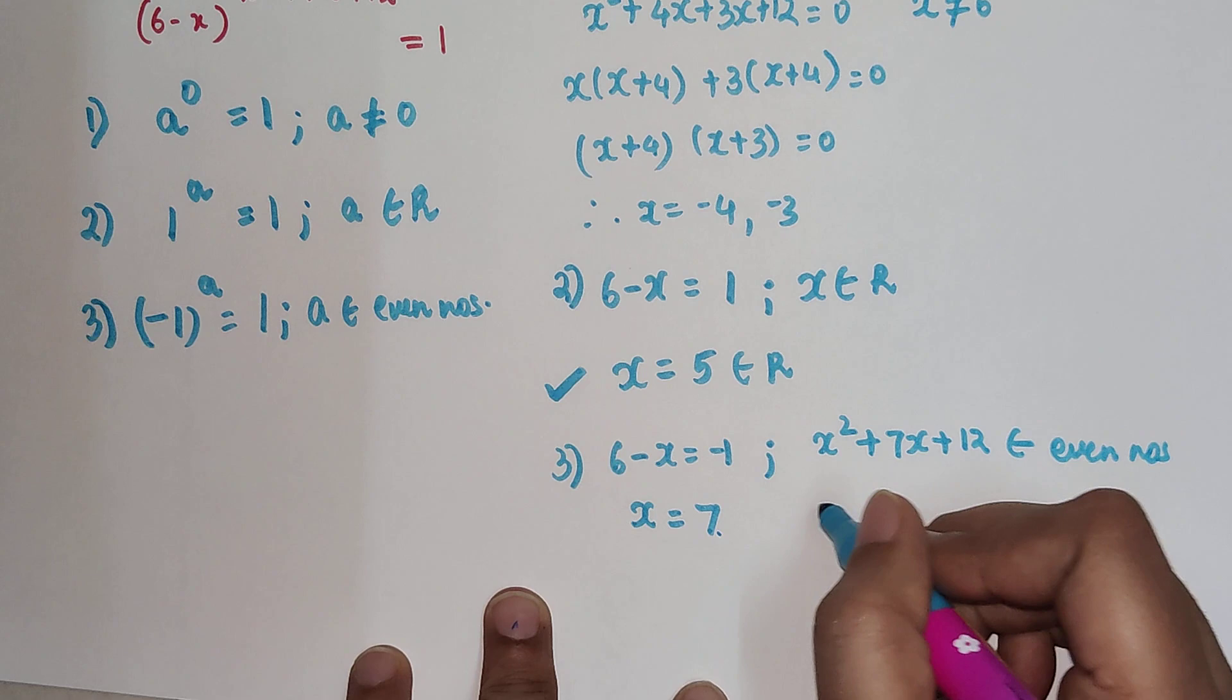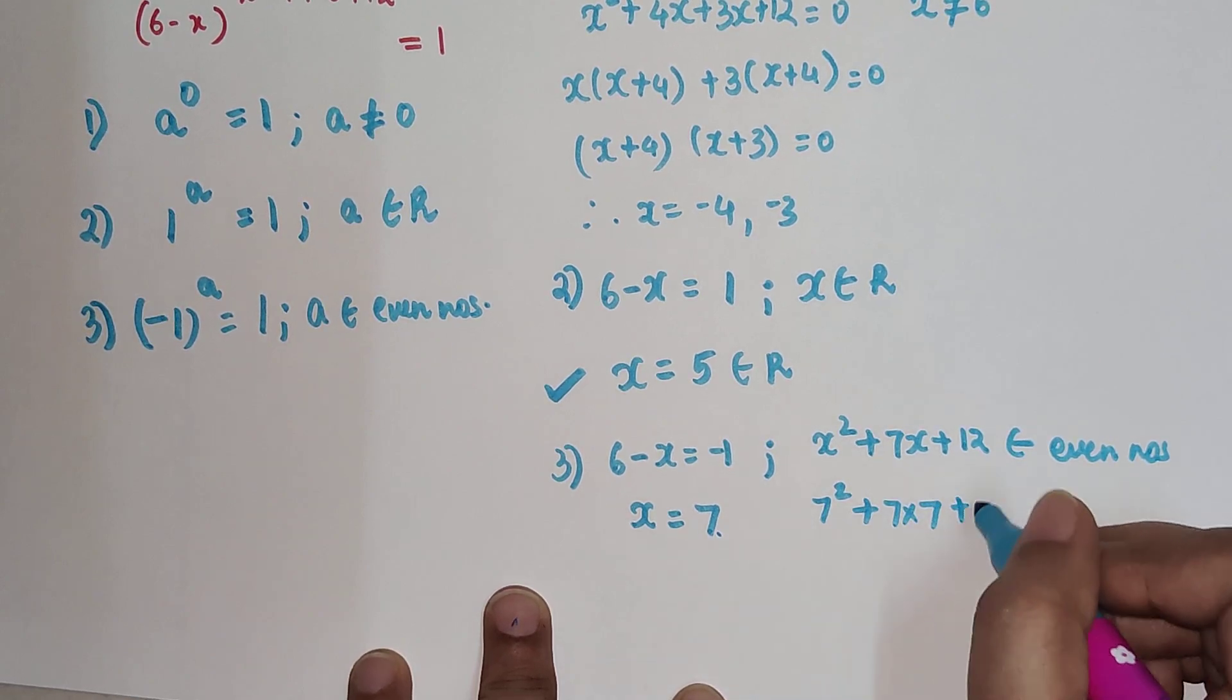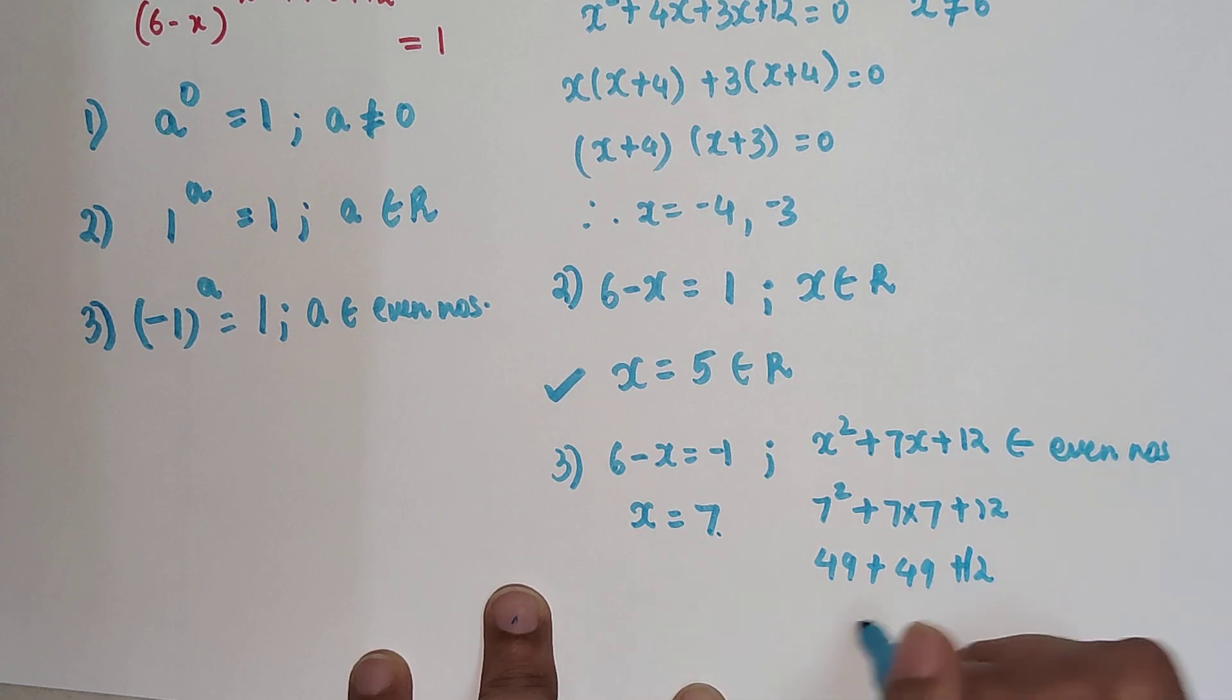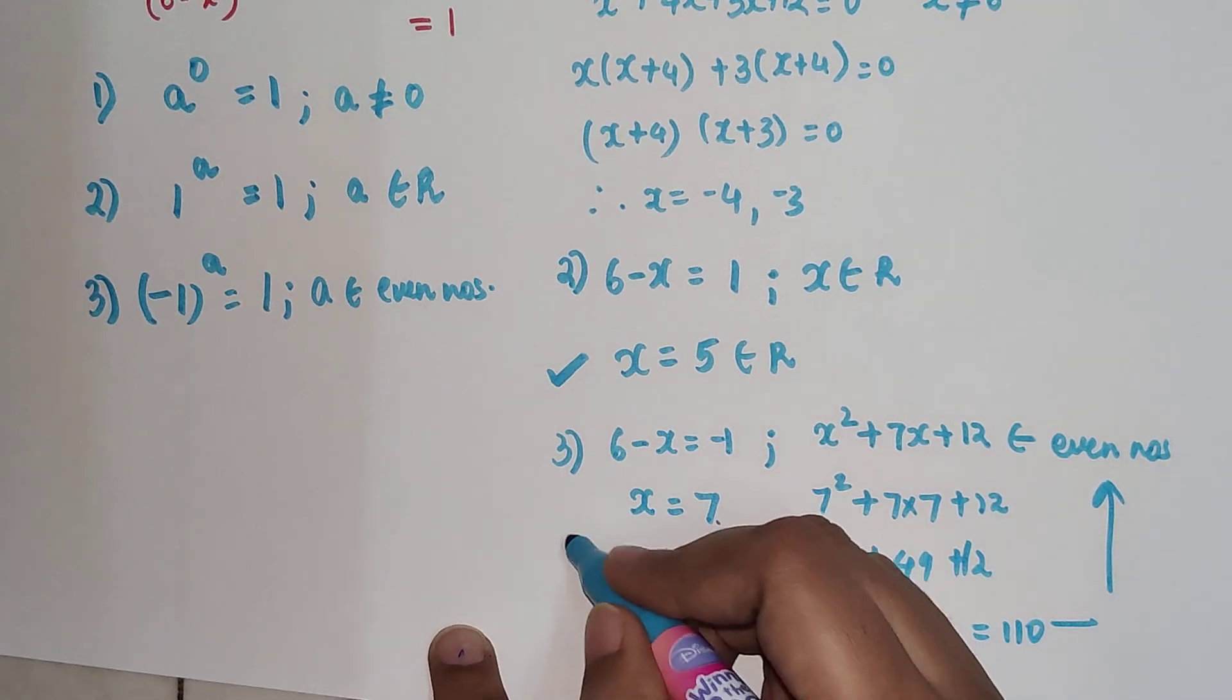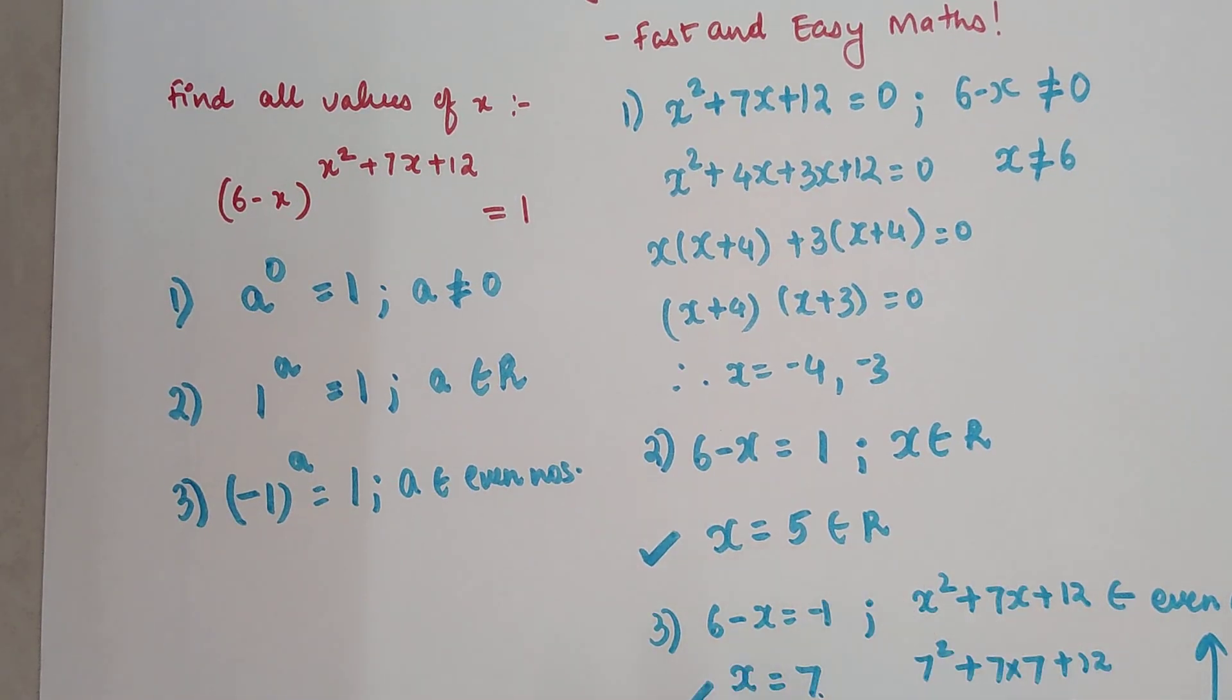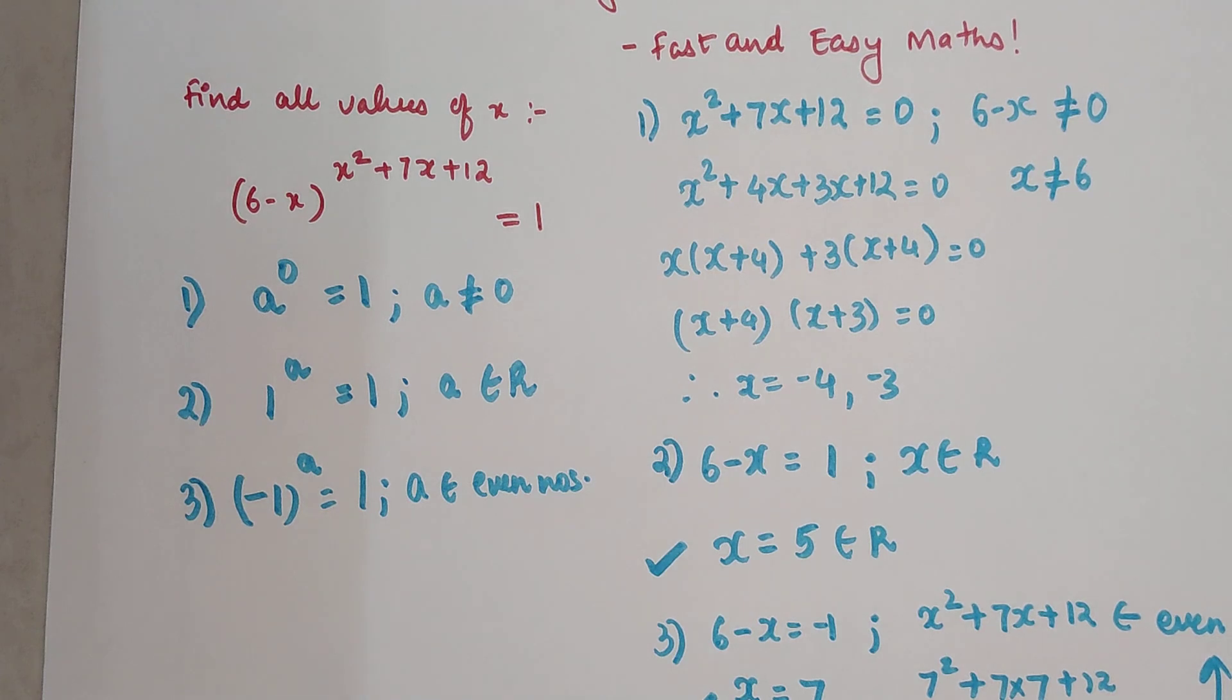So now over here, this is 7² + 7 × 7 + 12. So this is 49 + 49 + 12, that gets you 49 + 49 is 98 plus 12, that gets you 110, and that is an even number. So I can say that x = 7 is also one of my answers. So I really hope you understood the logic behind this, and after watching this video these kinds of questions will not be a problem for you all.